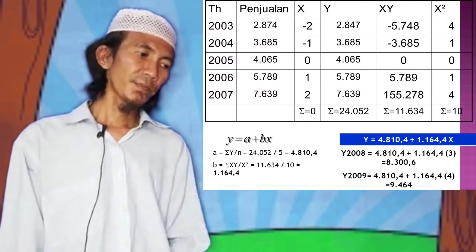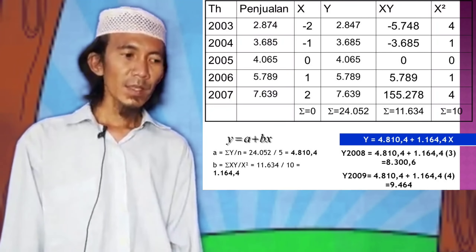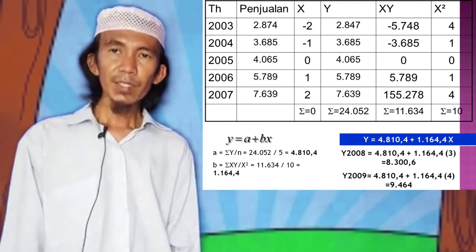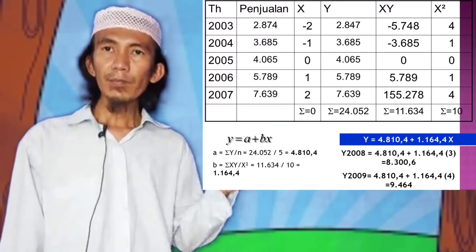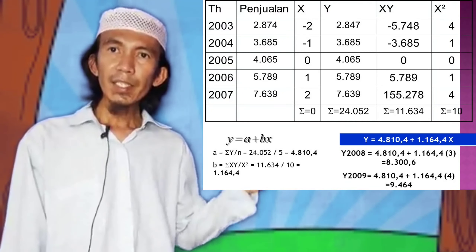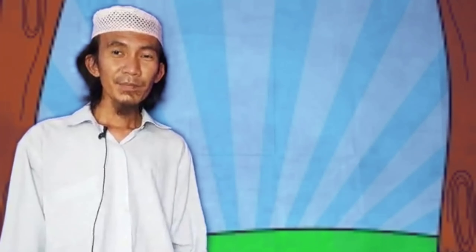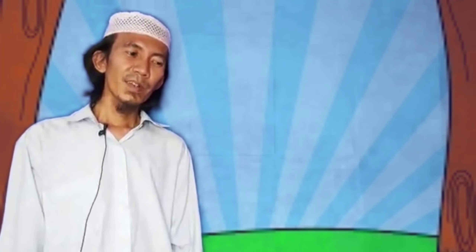Selanjutnya untuk 2009: Y 2009 sama dengan A plus B dikali X-nya sama dengan 4. Ketemu peramalan tahun 2009 nilainya. Sudah, bukan? Sudah, oke.